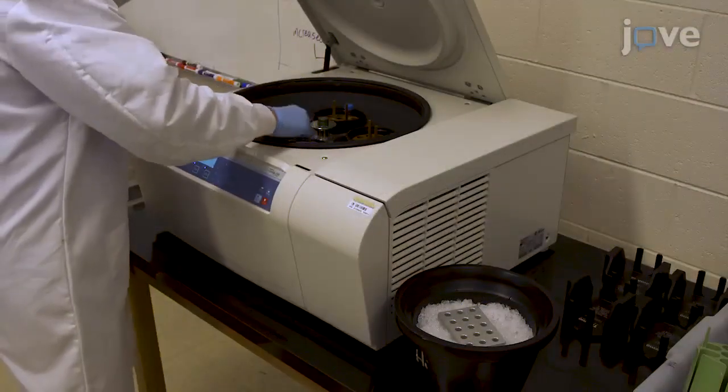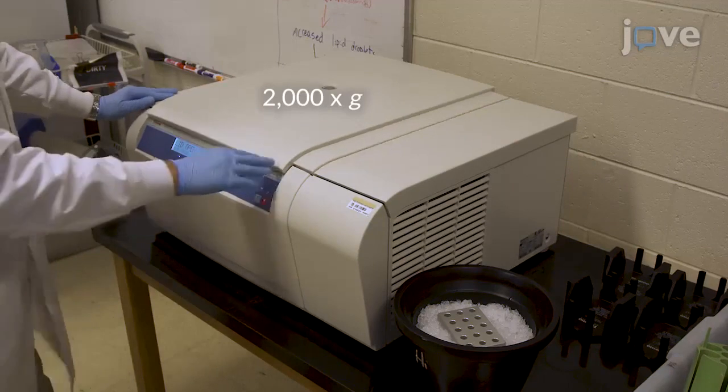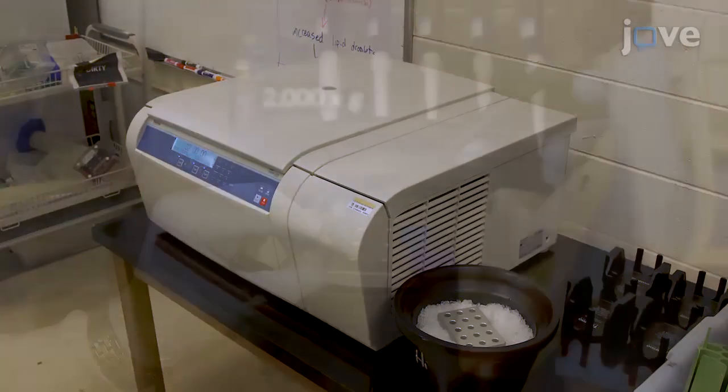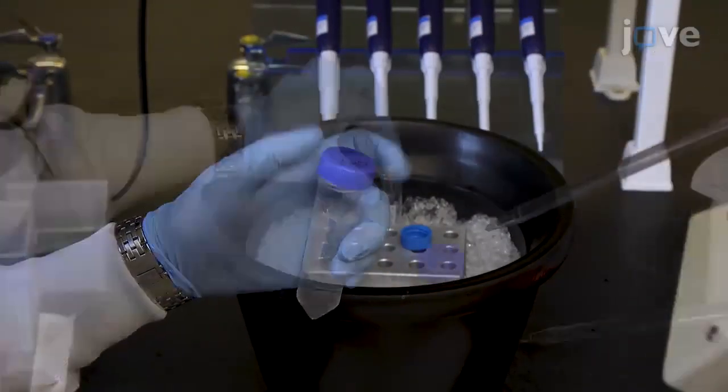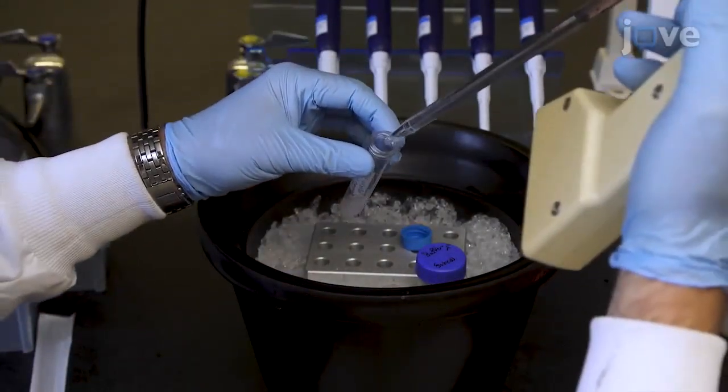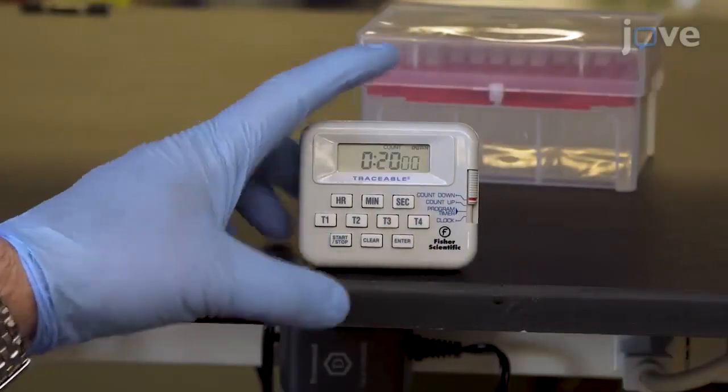Then place the tube in a centrifuge at 2000 times G and 4 degrees Celsius for 10 minutes to pellet. Decant the supernatant and resuspend the cells with 5x the packed cell volume with buffer A. Incubate on ice for 20 minutes.